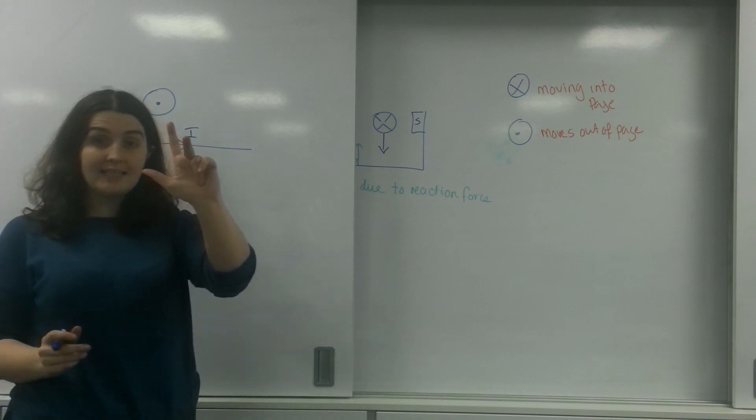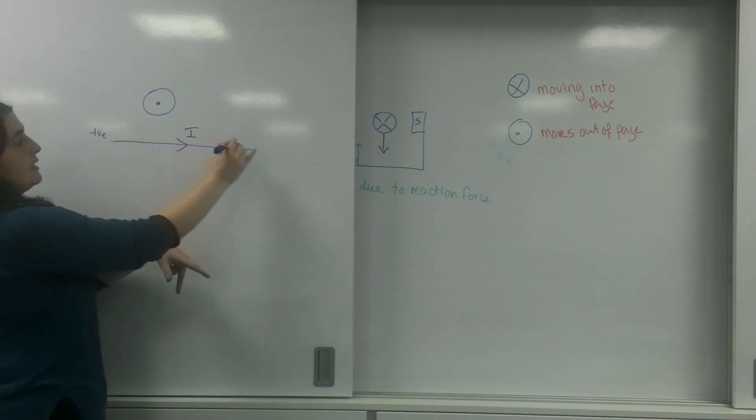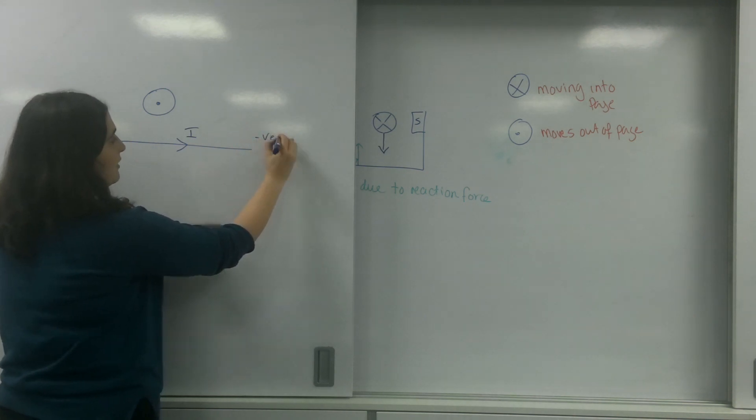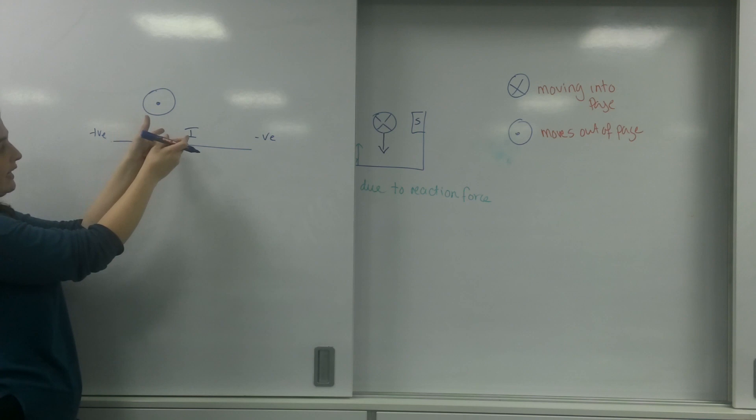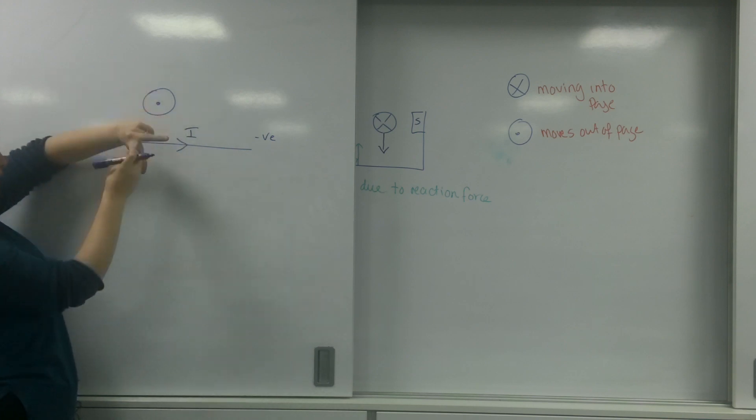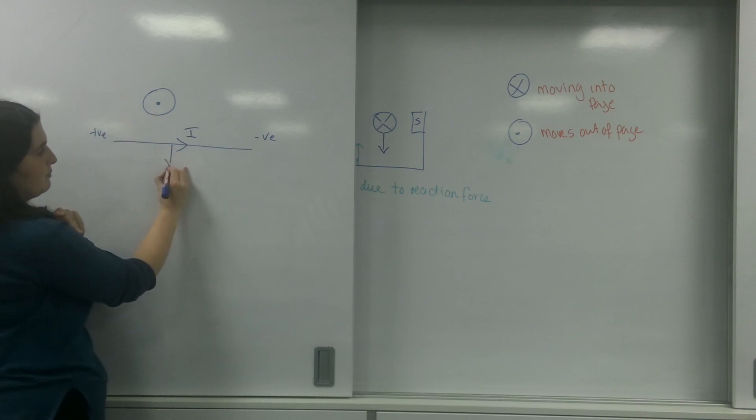And my field lines are coming out of the page. This is interesting because I can actually use this diagram for both. So my current is going this way. So left hand, my current is going from positive to negative. So positive to negative, these are lined up correctly. And my field is coming out of the page, which means this wire is going to move down.